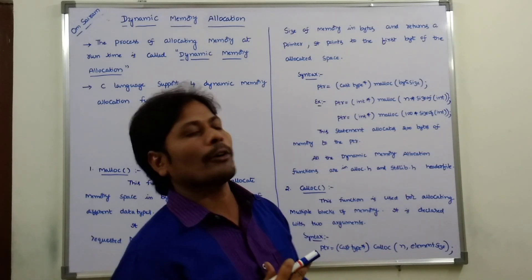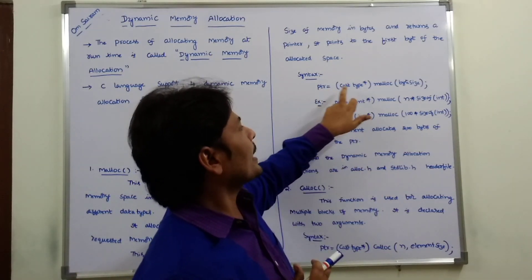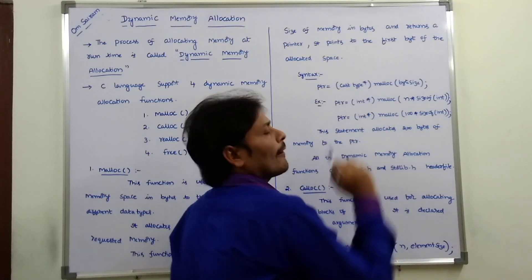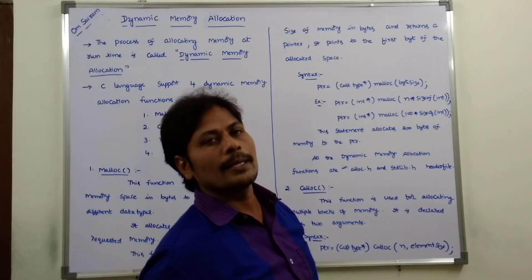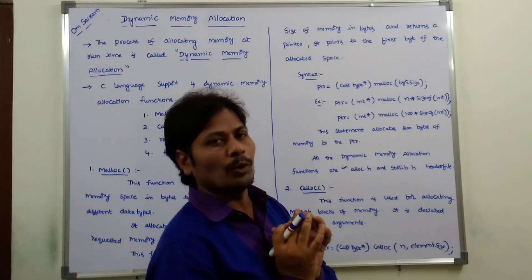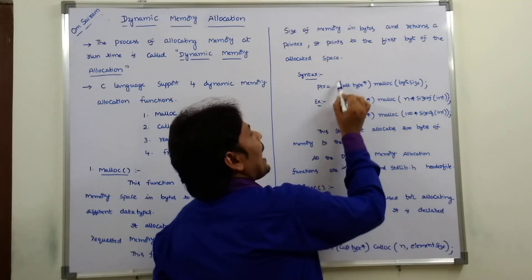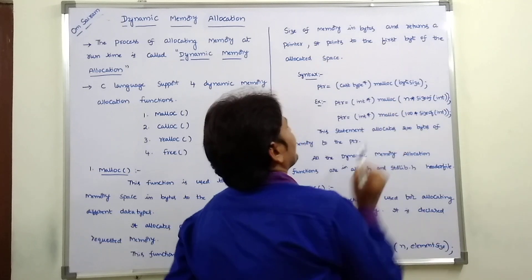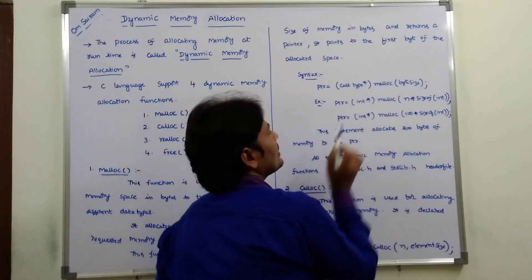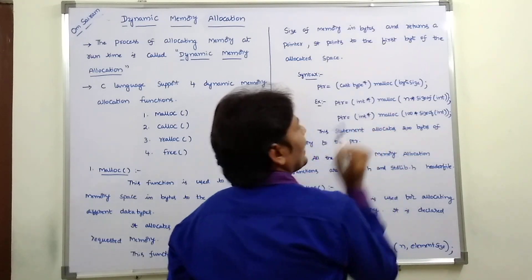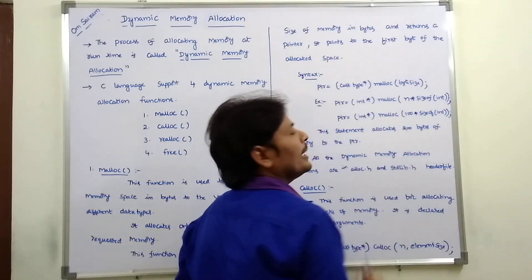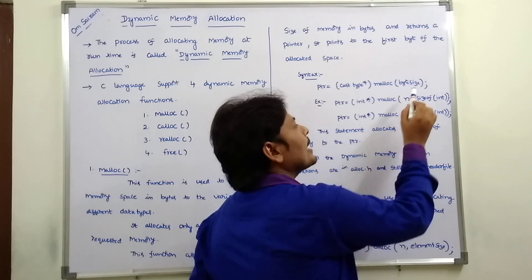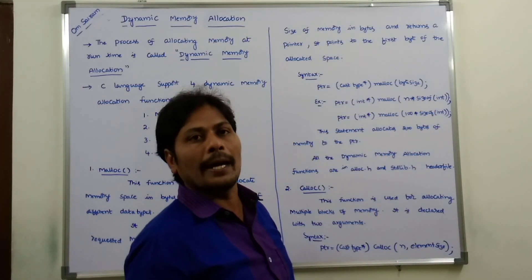The syntax of the malloc function is: ptr = (cast_type*) malloc(byte_size). Here byte_size is how many bytes are required. Cast type is the data type. For example: ptr = (int*) malloc(n * sizeof(int)), where n is the number of elements and sizeof(int) gives the size of the data type.